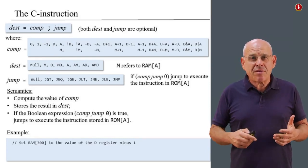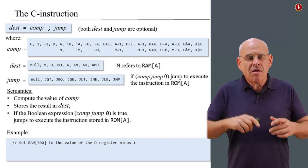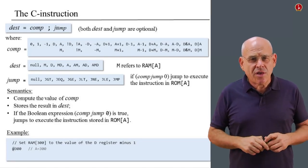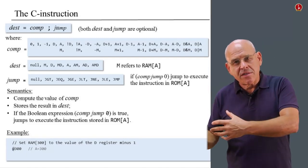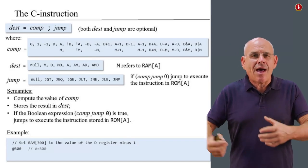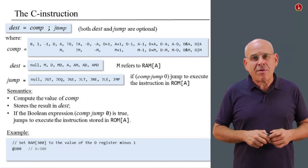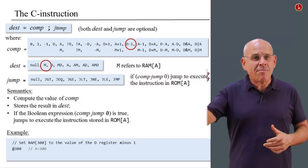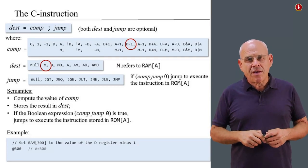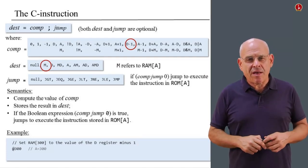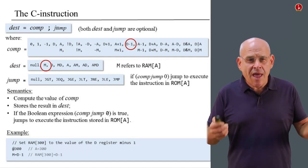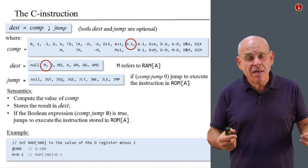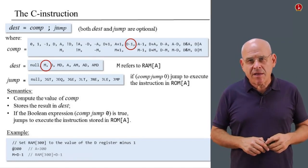Let's say I want to set RAM[300] — register number 300 — to the value of the D register minus one. Before I look at the language specification, I have to select the register on which I want to operate. Whenever I want to access the memory, I must use an A instruction, so I say @300. Then I look at the specification and see that D-1 is one of the values the CPU can compute, and M is one of the eligible destinations. So all I have to do is say M = D-1. I need two instructions to carry out this operation.